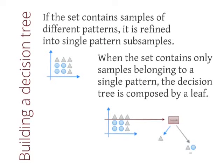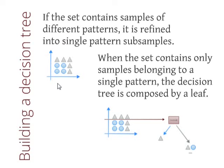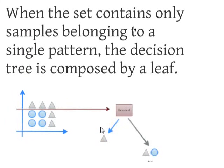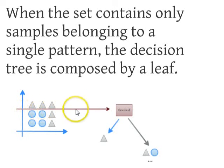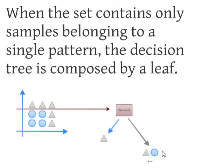How to build a Decision Tree? Suppose that a set contains samples of different patterns. The Decision Tree aims to refine it into single-pattern subsamples. Suppose you have two features and the patterns are divided like this — samples with circles and samples with triangles. When a set contains only samples belonging to a single pattern, the Decision Tree creates a leaf. For example, if we make a threshold here dividing this feature, we divide this sample set from here to the top — all elements are triangles — and we create a leaf.